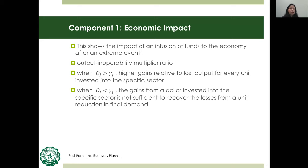The first component is economic impact, which accounts for the impact of infusion of funds to the economy after an extreme event. The ratio between the output multiplier and the inoperability multiplier is used to compute this. The output multiplier accounts for gains while the inoperability multiplier accounts for risk. When the output multiplier is greater than the inoperability multiplier, there are higher gains relative to lost output for every peso invested. When it is less, the gains from investment are insufficient to recover losses from reduction in final demand.